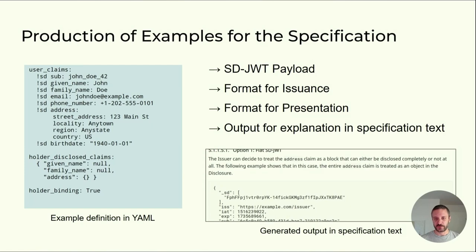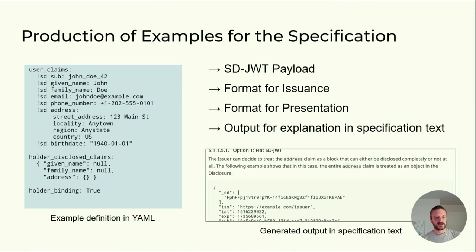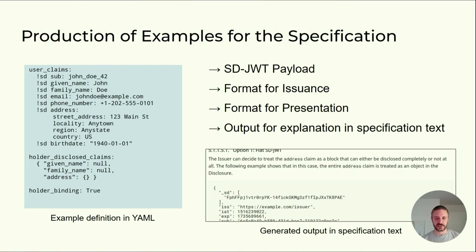Just a word on the examples we produce for the specification. We defined a very simple YAML-based format. You can see an example here on the left that is used to define essentially what a credential should contain and which of the claims in the credential should be selectively disclosable. Most of the claims are marked with an exclamation mark SD, which is a YAML type. By this YAML type, we declare that a certain claim should be selectively disclosable and our library consumes that. Our library will then produce the SD-JWT itself — the format used for the issuance, the format for the presentation, and so on — and we can put those artifacts in as examples in the spec.